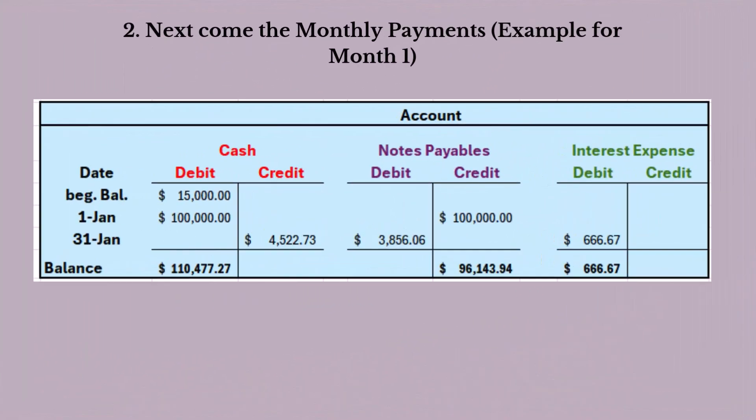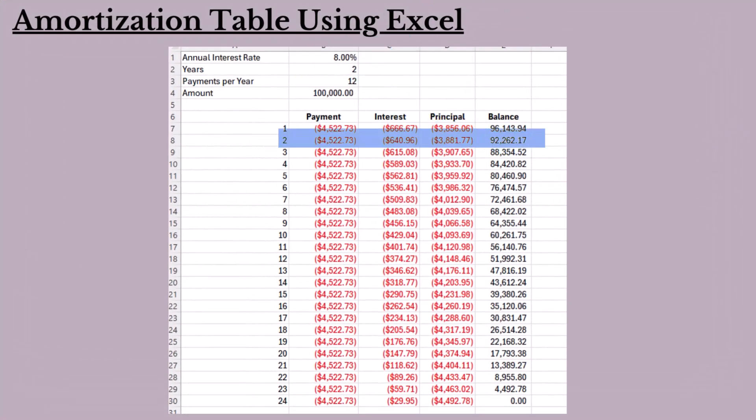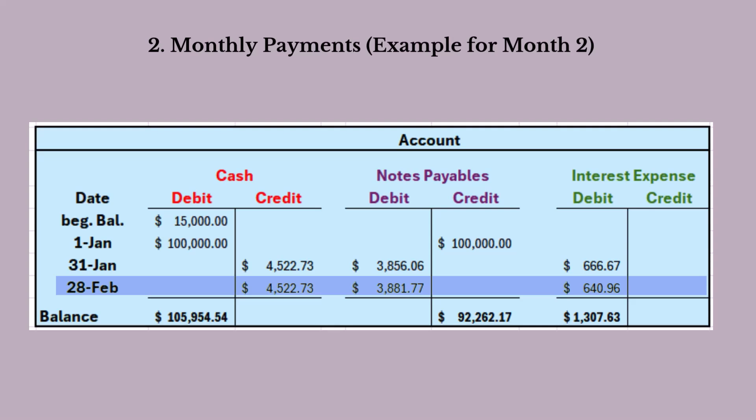To record the first payment: interest expense is debited for the interest portion of $666.67; notes payable is debited for the principal portion of $3,856.06, reducing the outstanding loan balance; and cash is credited for the monthly payment of $4,522.73. For the second monthly payment, the interest portion is $640.96 and the principal portion is $3,881.77, leaving a remaining balance of $92,262.17. Interest expense is debited for $640.96, notes payable is debited for $3,881.77, and cash is credited for $4,522.73.